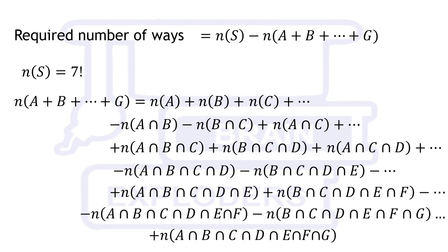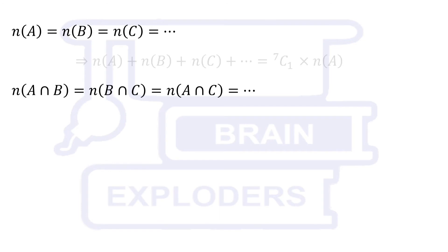Since all these sets are symmetric, therefore all sets have same number of elements. All intersections of two sets have same number of elements and so on.